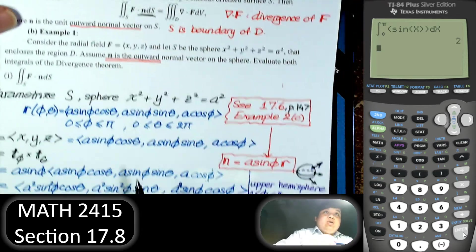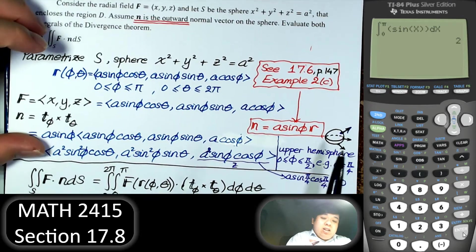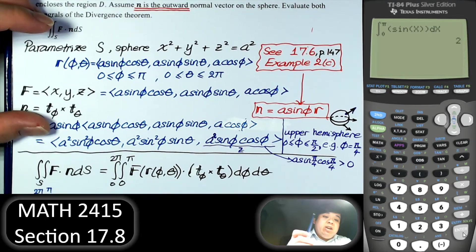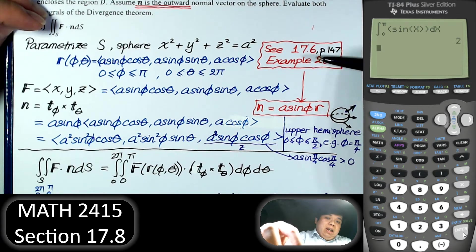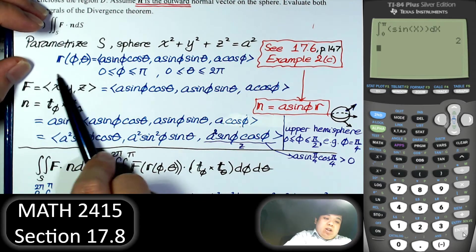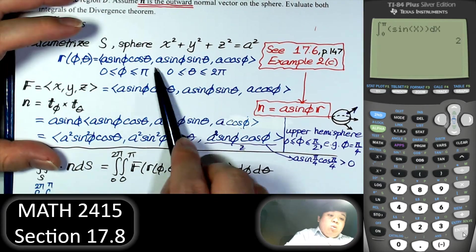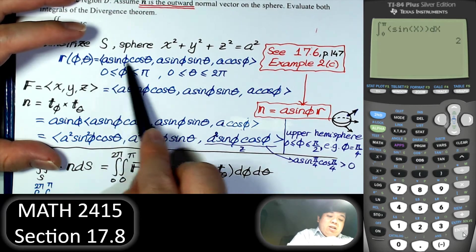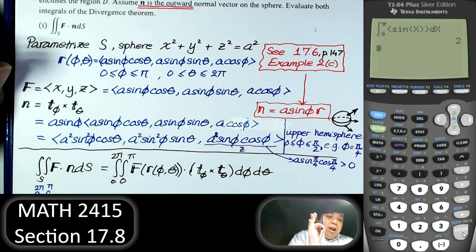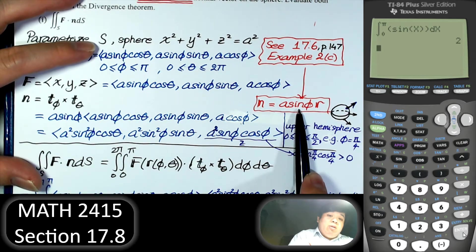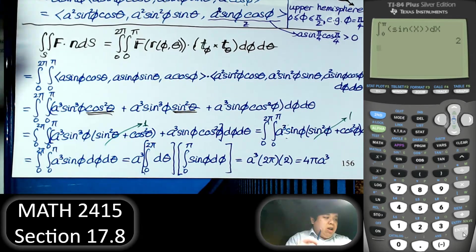So that is the surface integral on the left-hand side: 4π A³. Since we're on the surface of the sphere, the radius A is constant, so we only have two parameters, φ and θ, and the normal vector is given by that form. That is a very important example.